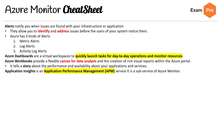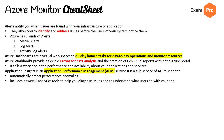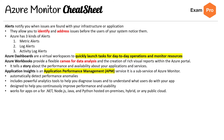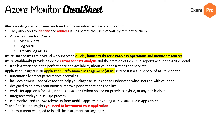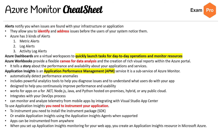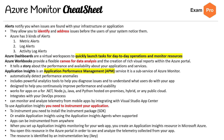Application Insights is an application performance management (APM) service and a subservice of Azure Monitor. It automatically detects performance anomalies and includes powerful analytics tools to help you diagnose issues and understand what users do with your app. It works for apps on .NET, Node.js, Java, and Python, hosted on-premise, hybrid, or public cloud. It integrates with DevOps processes and can monitor telemetry from mobile apps via Visual Studio App Center. To use Application Insights, you instrument your application by installing the SDK or enabling Application Insights using agents. When you set up monitoring for your web app, you create an Application Insights resource in Azure Monitor, open it in the Azure portal to view telemetry, and the resource is identified by the instrumentation key (IK).